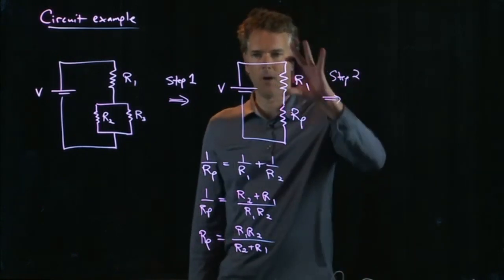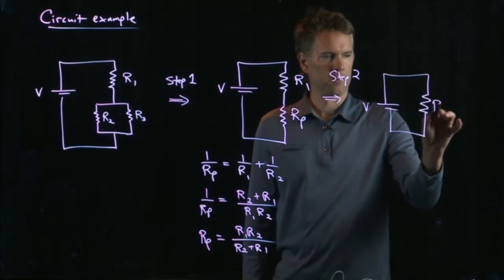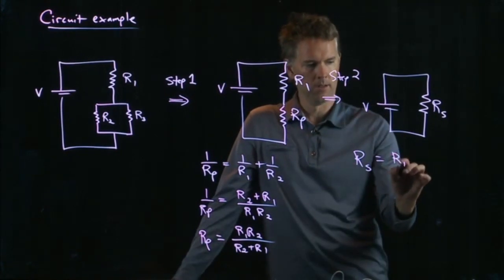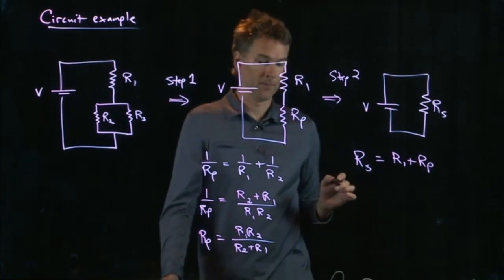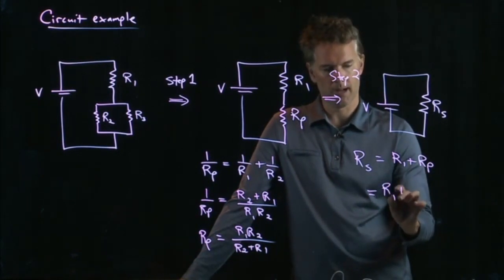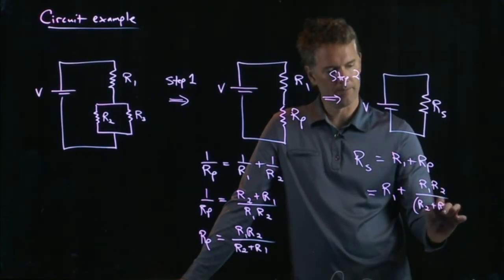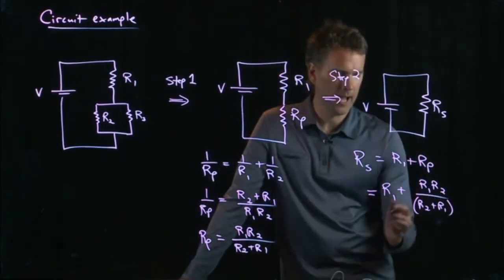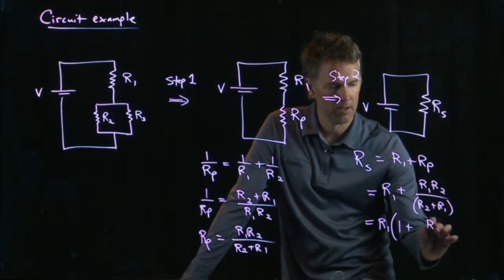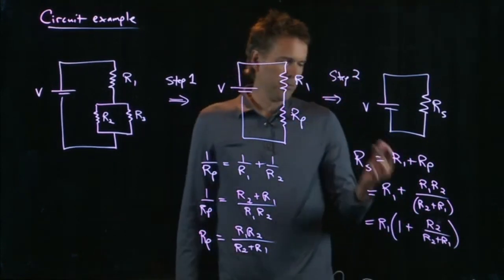Step two is now we get rid of the series. Rs is equal to R1 plus Rp. And we now know what Rp is. So Rs is equal to R1 plus R1 R2 divided by R2 plus R1. And in fact, I can pull out a common factor here of R1, and I get R1 times 1 plus R2 over R2 plus R1.